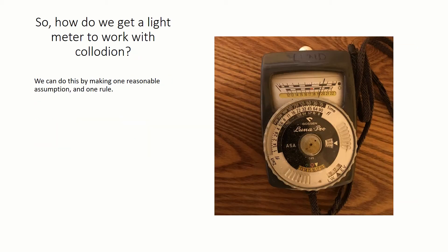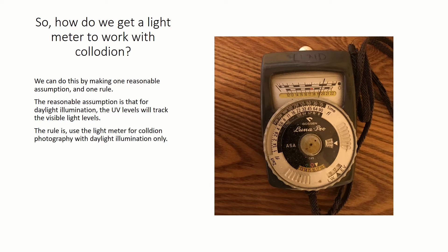So how do we get around this problem? We do this by making one reasonable assumption and one rule. The reasonable assumption is that for daylight illumination, the UV levels track the visible light levels. That is to say, if the visible light intensity increases by one stop from scene A to scene B, we would expect the UV light levels to do the same. The rule is, use the light meter for collodion photography with daylight illumination only. Knowing this, there are still some occasions when our reasonable assumption breaks down.